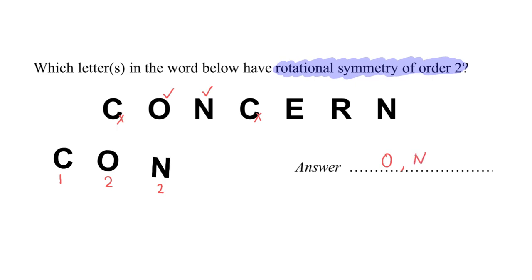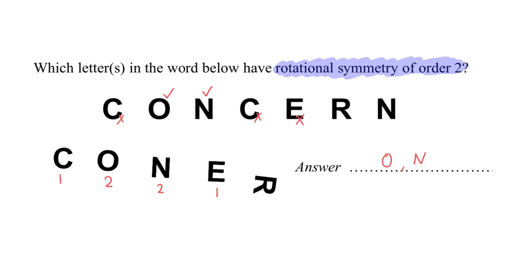We are left with two more letters to try. For letter E: having gone one round there's only one time we see letter E exactly the same, so letter E is not the answer. Let's try letter R: one time also, so letter R is not. Therefore the only letters that have rotational symmetry of two are O and N. We have successfully solved this problem.